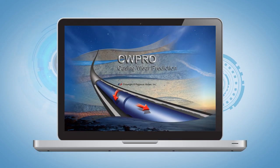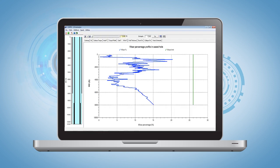Computer models such as CW Pro can accurately predict casing wear based on factors including rate of penetration, tool joint material, and dogleg severity.